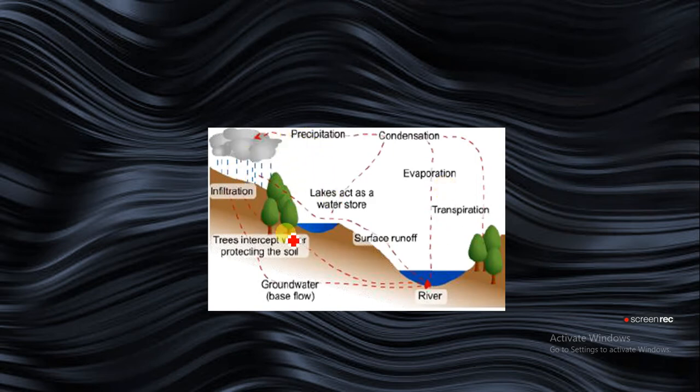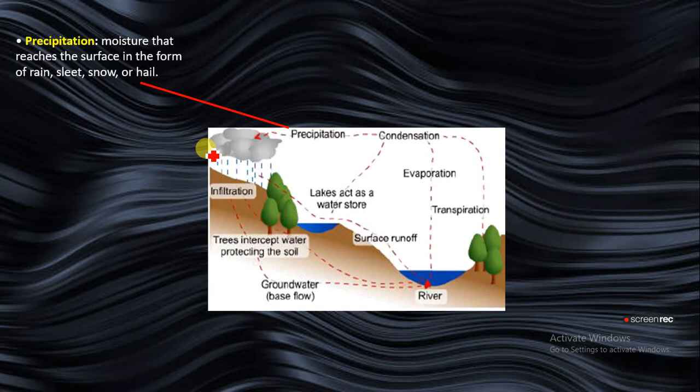Each of these processes take place to enable the movement of water across the earth surface. First, precipitation: what does it mean? Precipitation has to do with moisture that reaches the surface in the form of rain, sleet, snow or hail.